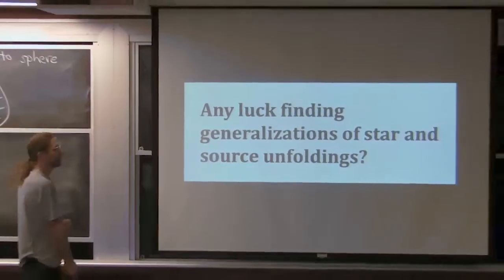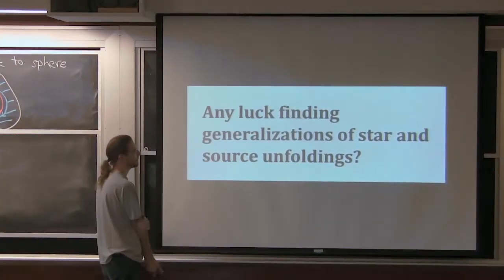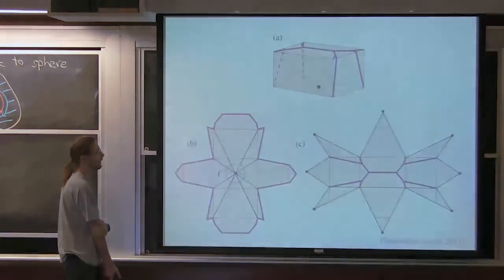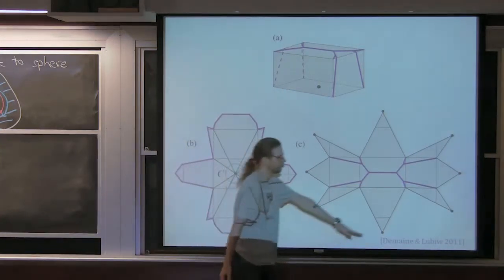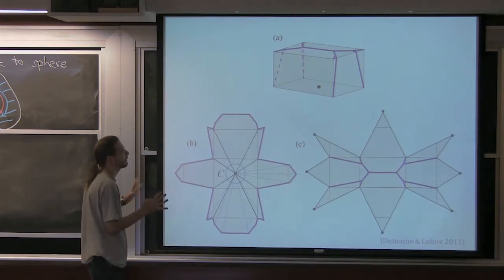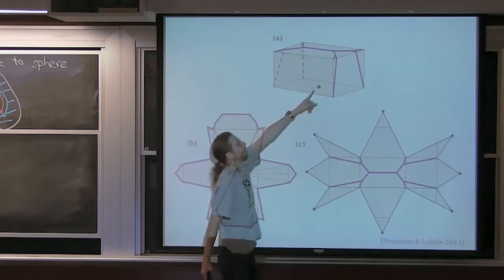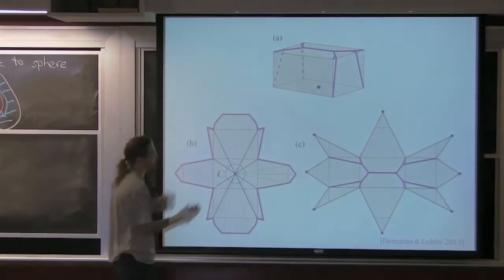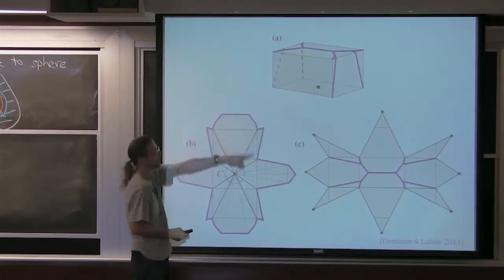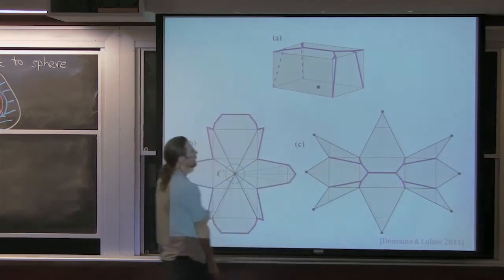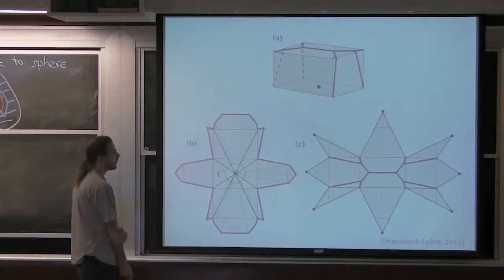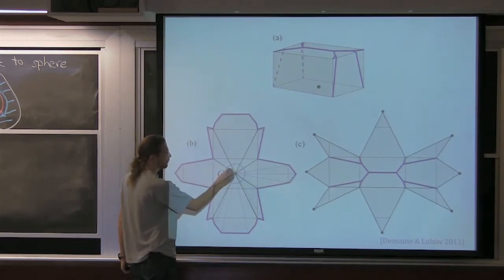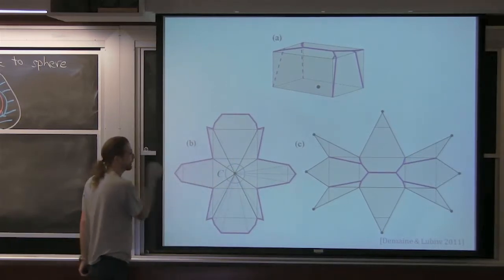Now we have newer and more exciting things: updates you haven't heard of. One question was about generalizing the star and source unfoldings, and there's a new paper about this, with my PhD advisor Anna LeBou. Here we have a box, we take a point X, and we show the source unfolding from X alongside the star unfolding for comparison. They're color-coded: what you cut is the ridge tree, and in the star unfolding you end up gluing along the ridge tree.